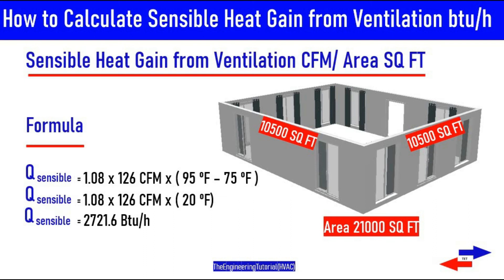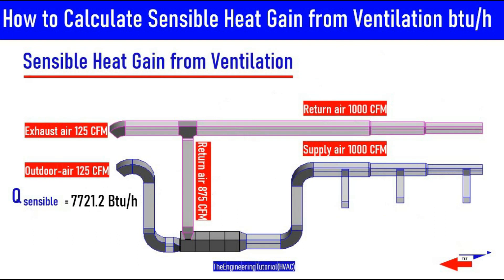For the second example using the CFM per square foot method, we had 126 CFM of airflow. Q sensible equals 1.08 times 126 CFM times (95°F minus 75°F), which gives us 2,721.6 BTUs per hour. Again, remember that this is a coil sensible heat gain, not a sensible space load. That's it for today — thank you for watching.